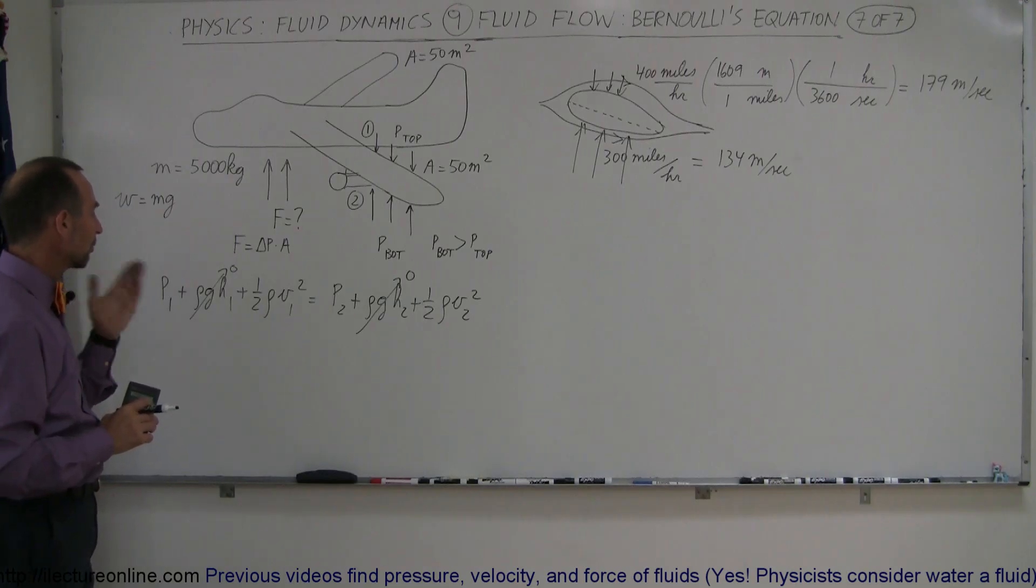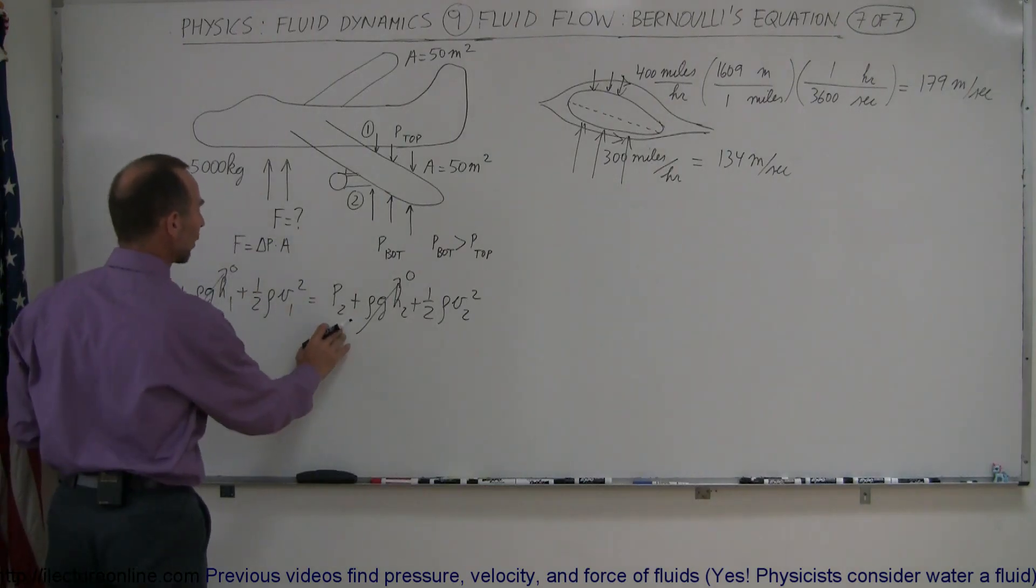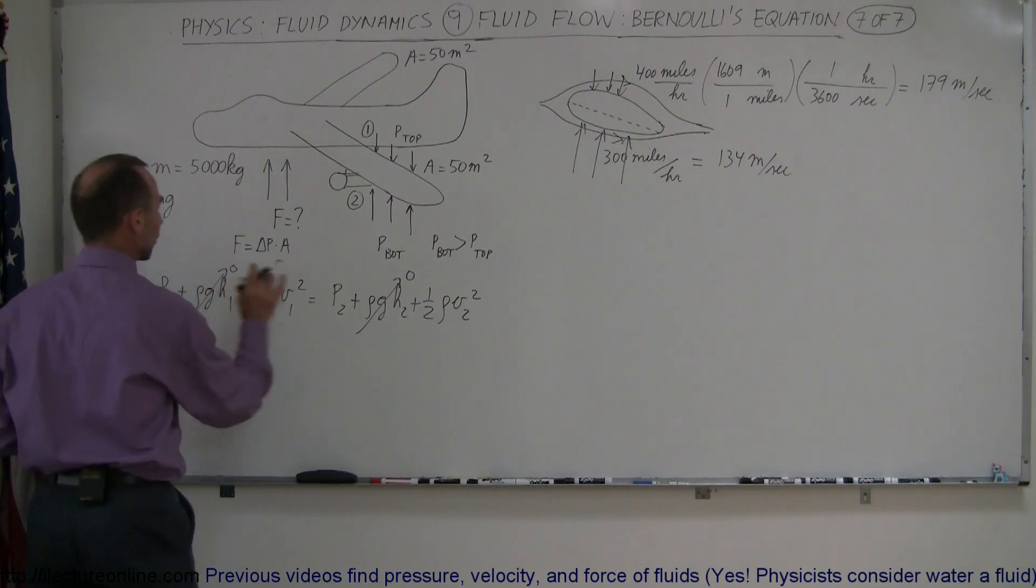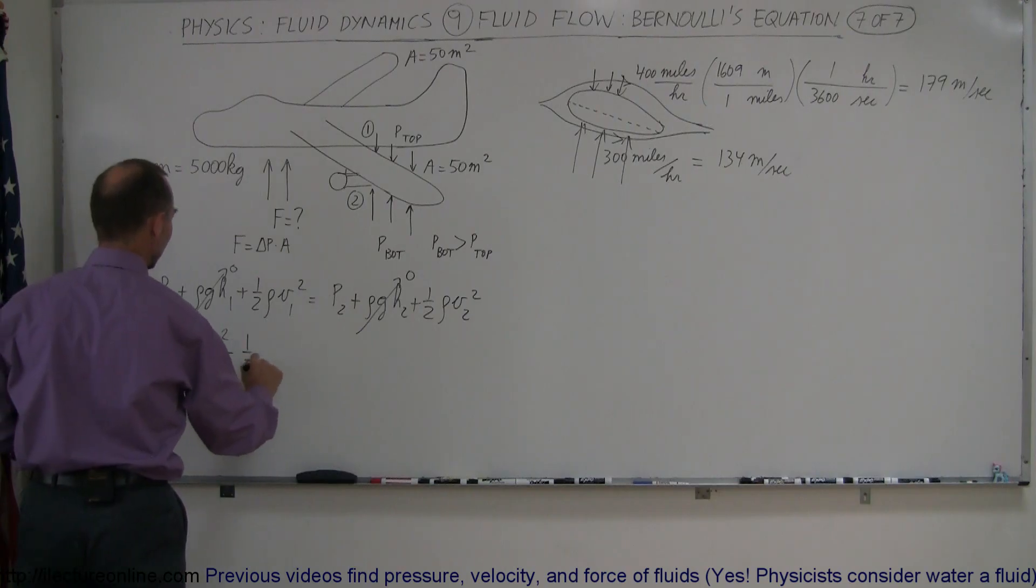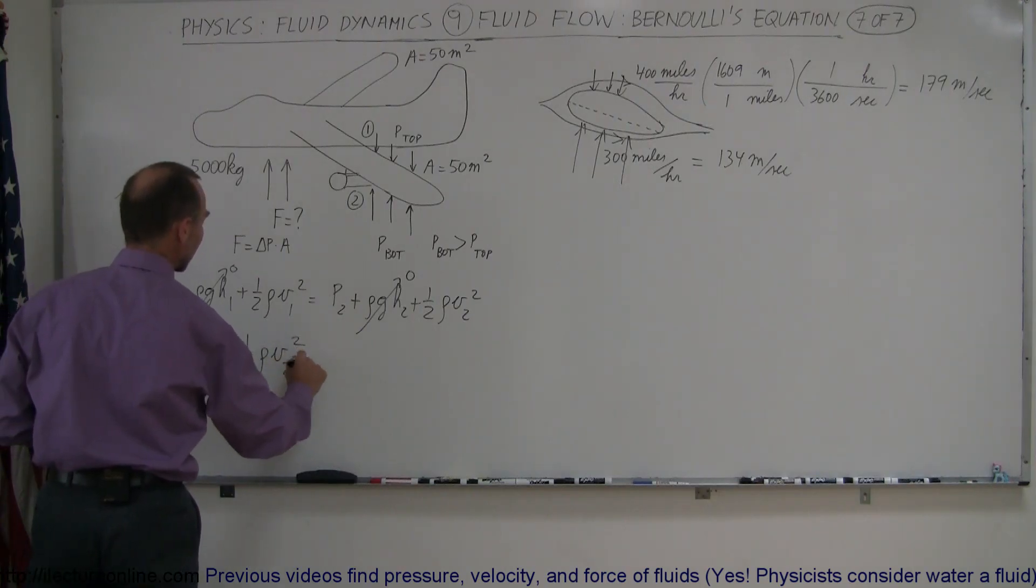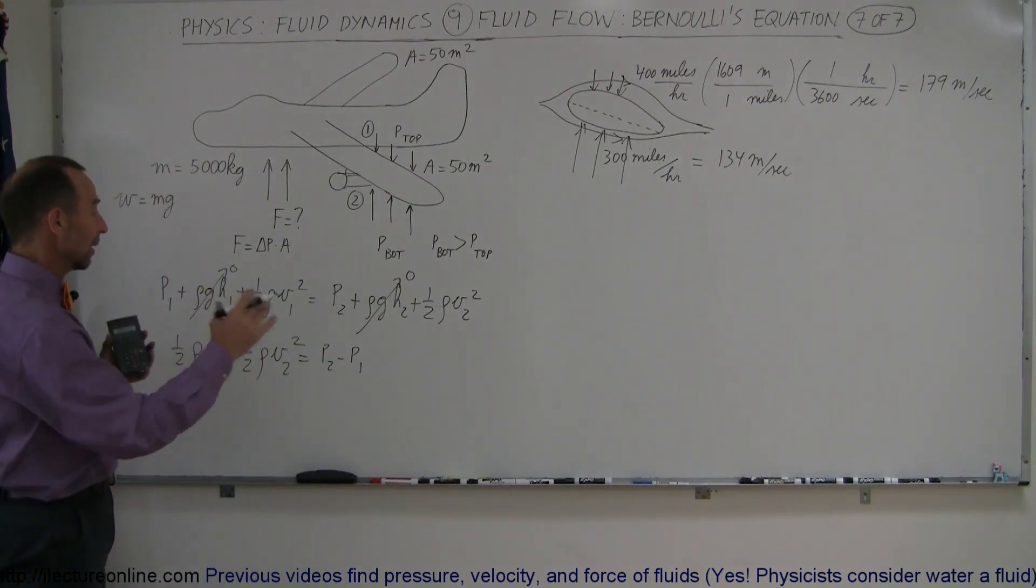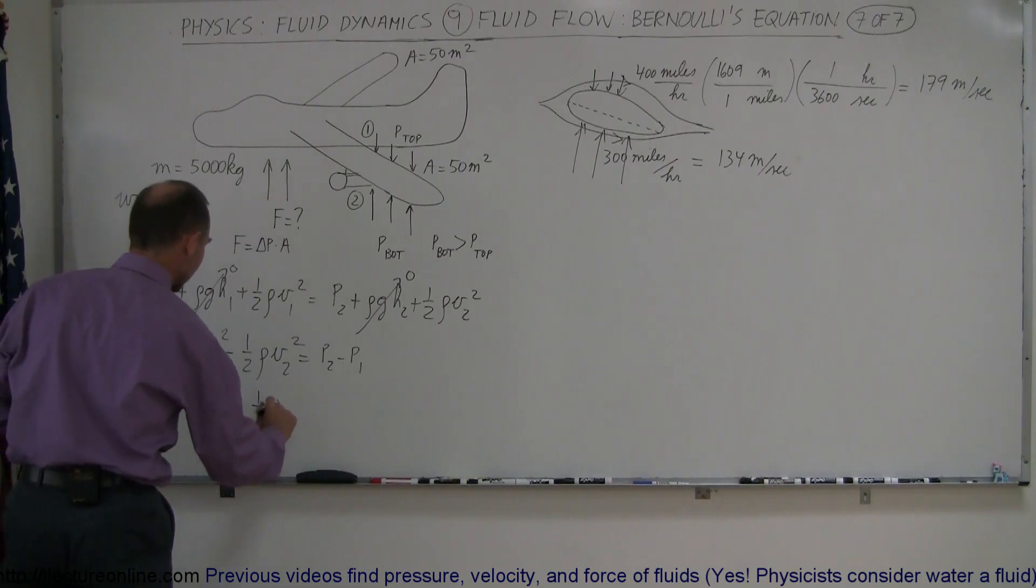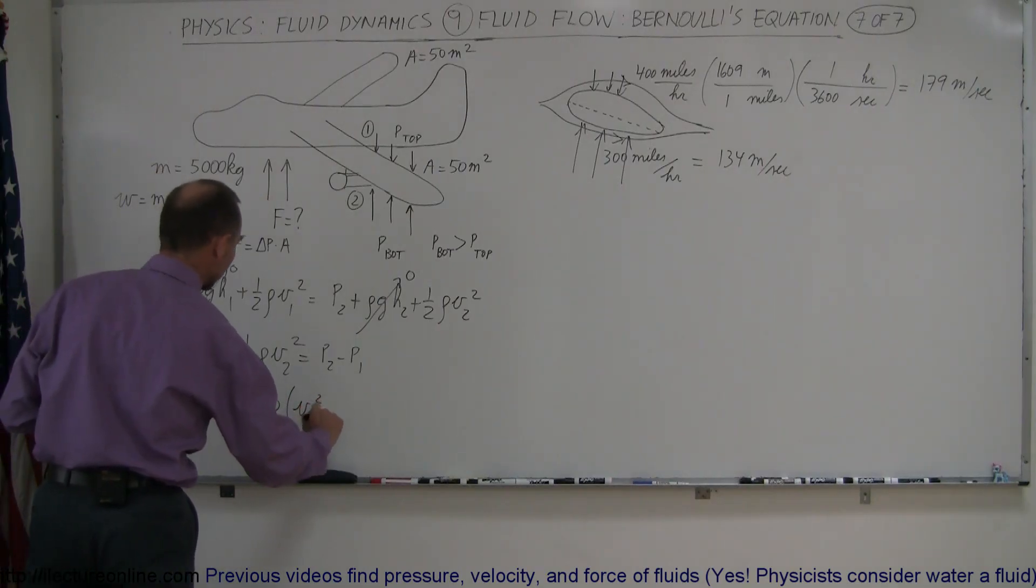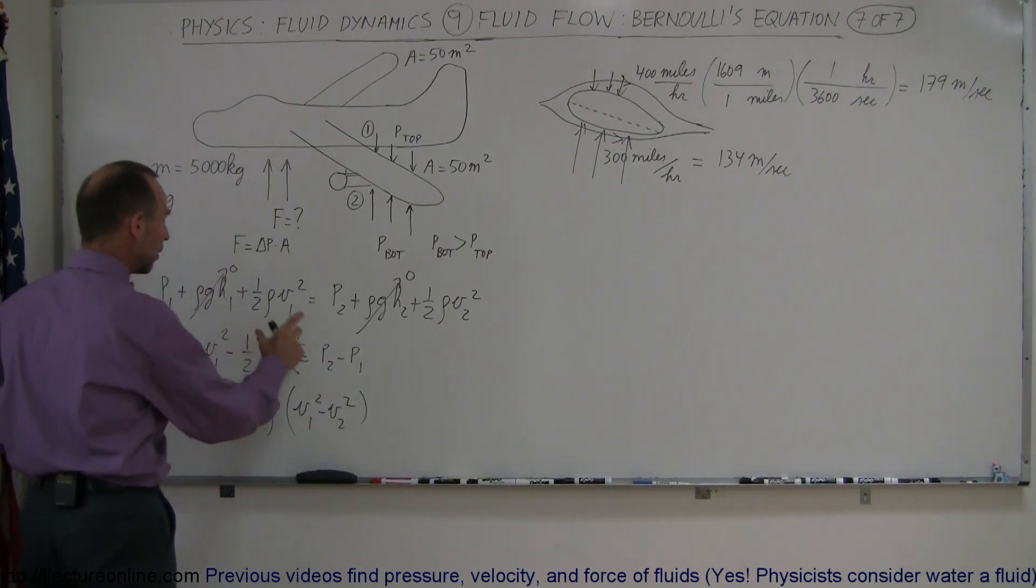Now, we want pressure 1 minus pressure 2. Now, we expect pressure 2 to be greater. So, I'm going to solve this whole equation for pressure 2 minus pressure 1. So, I'm going to move pressure 1 over here, move that over here. So, we have 1 half rho V1 squared minus 1 half rho V2 squared is equal to pressure 2 minus pressure 1. Remember, we expect a greater pressure at the bottom than at the top. Flipping the equation around, I get pressure 2 minus pressure 1 is equal to, and factoring out 1 half times rho, I'm left with V1 squared minus V2 squared. So, this will give me the pressure difference above and below the wing.